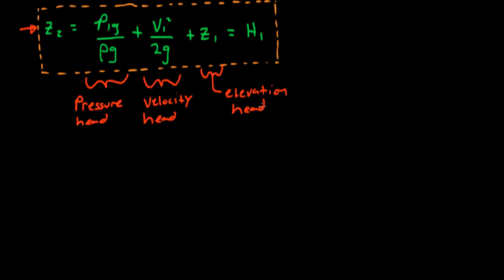Notice that the head is a relative quantity — it depends on the elevation at station 1 relative to a reference datum. As with all measures of energy, the values are relative to a reference. Head is a concept that is particularly useful for internal flows, such as flows within a pipe. Let's look at the change in head for a simple flow through a pipe with a change in elevation, velocity, and pressure.